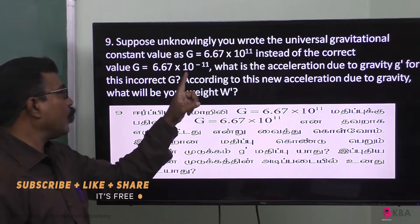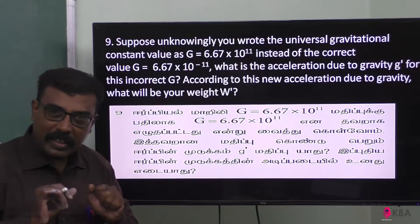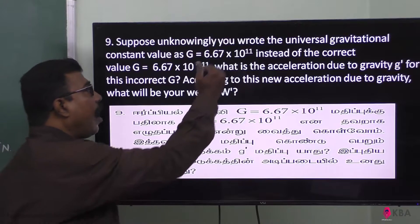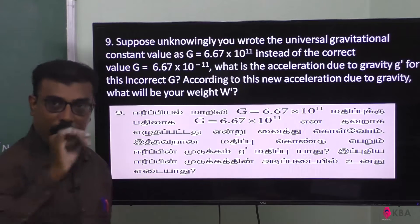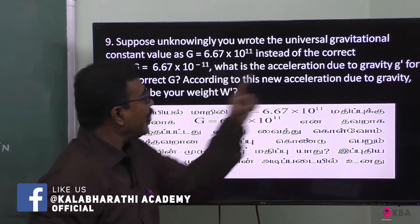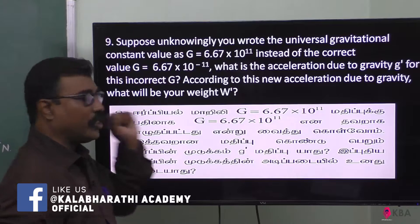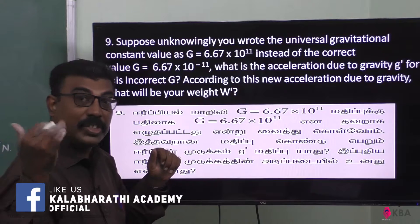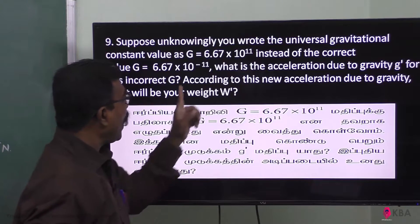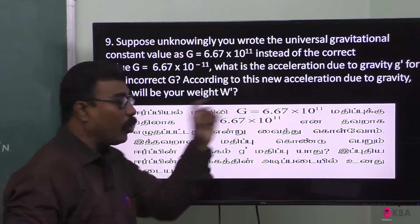The universal gravitational constant, we know, the correct value is 6.67 into 10 to the power of minus 11. Now, what is the acceleration due to gravity g dash for this incorrect G? According to this new acceleration due to gravity, what will be your weight?